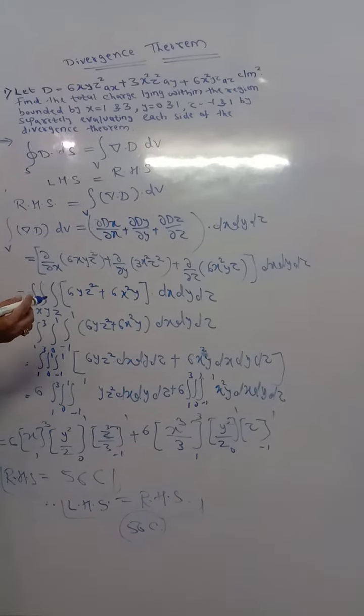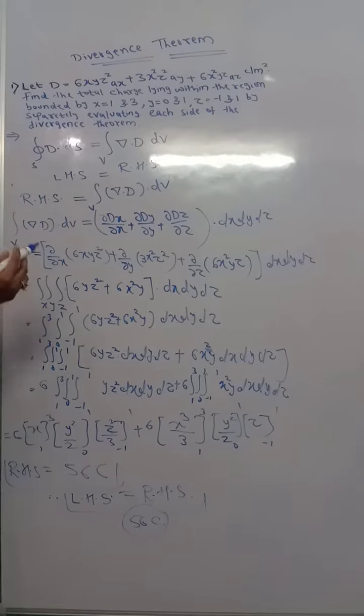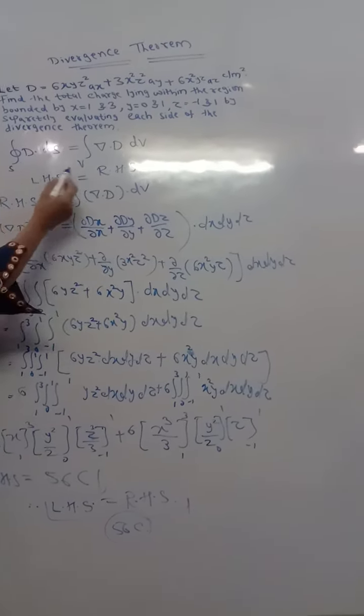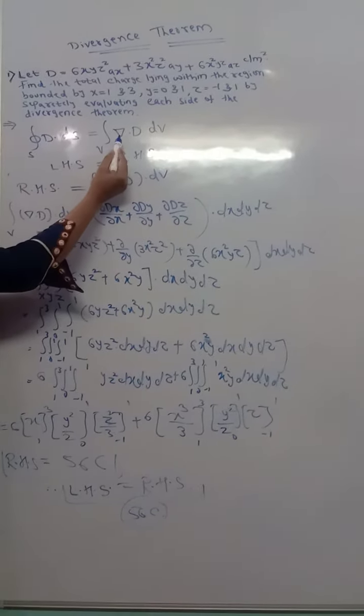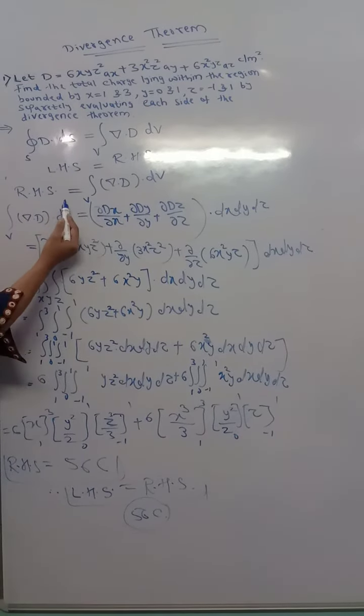We have done the left-hand side, that is nothing but integral of flow surface of d dot ds. Now come towards the right-hand side. The right-hand side is nothing but my integral of volume of delta d into dv. This is the left-hand side, this is the right-hand side.